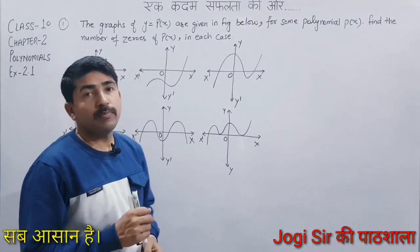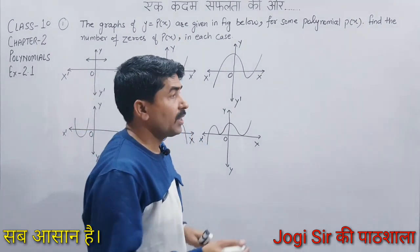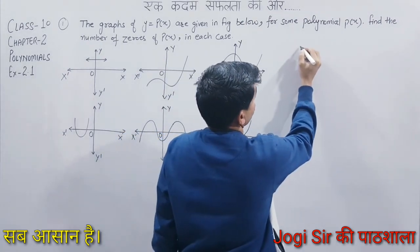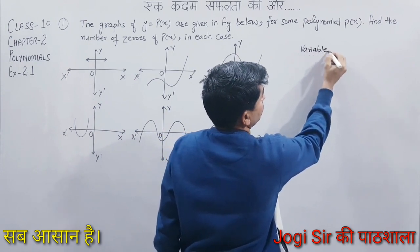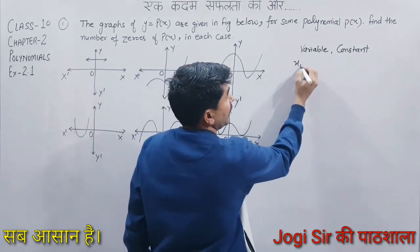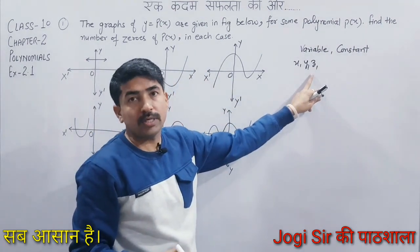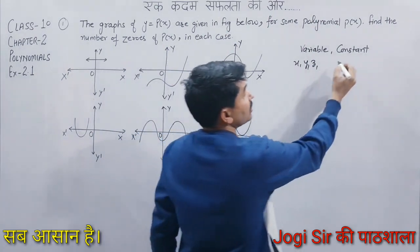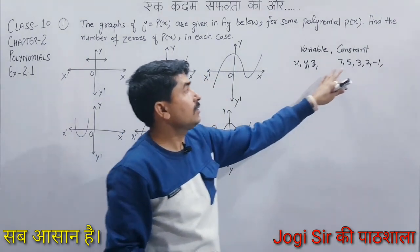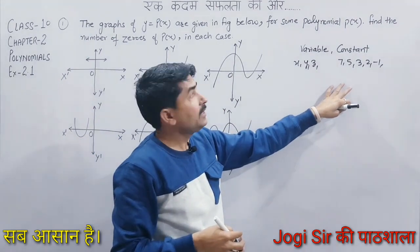First of all, we need to know about polynomials and zeros. We have read in 9th class that there are two types of quantities: variables and constants. Variables are like x, y, z. Constants are like 7, 5, 3, 2, minus 1, and so on. What is formed by combining constants and variables is called a polynomial.